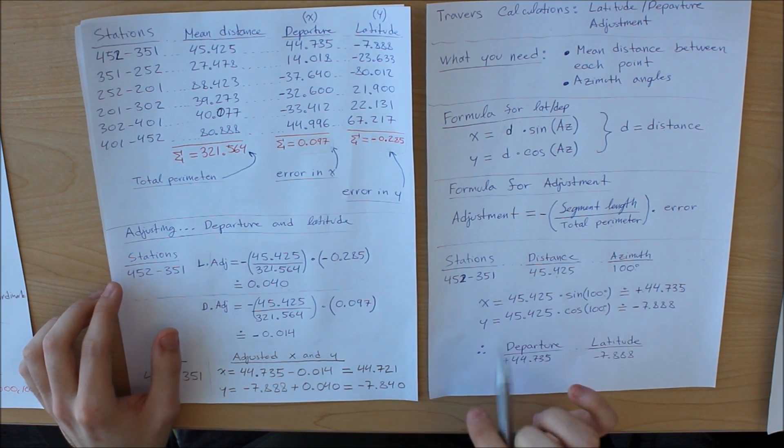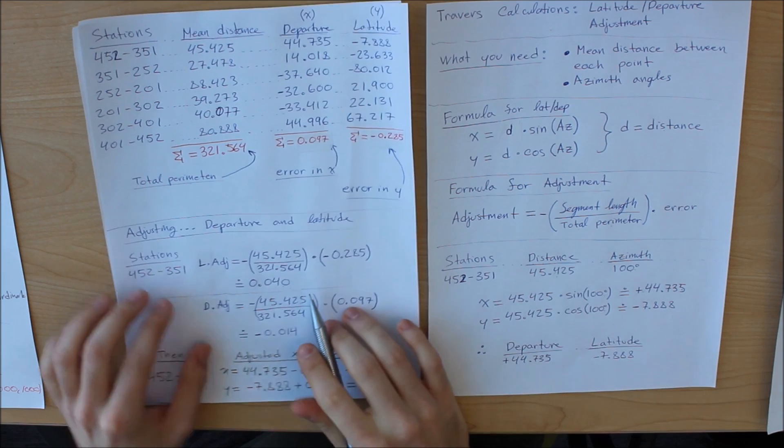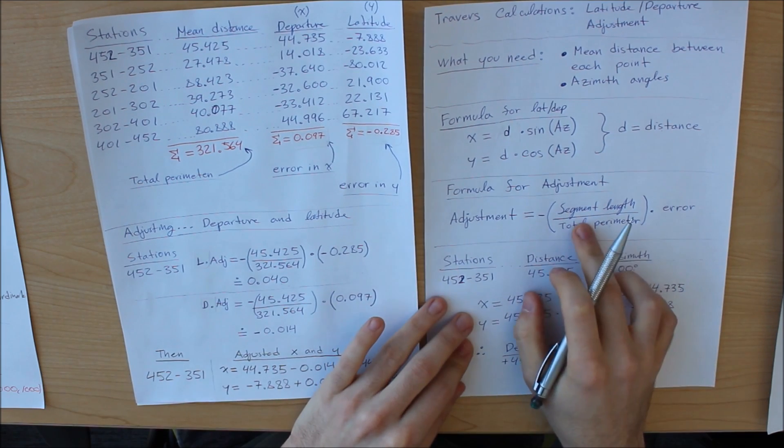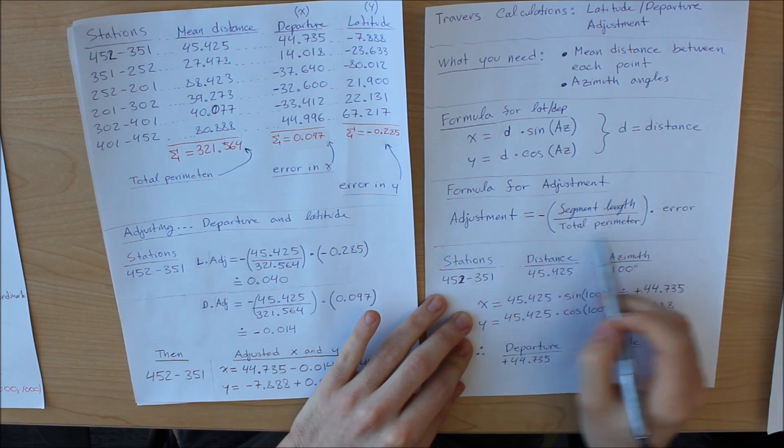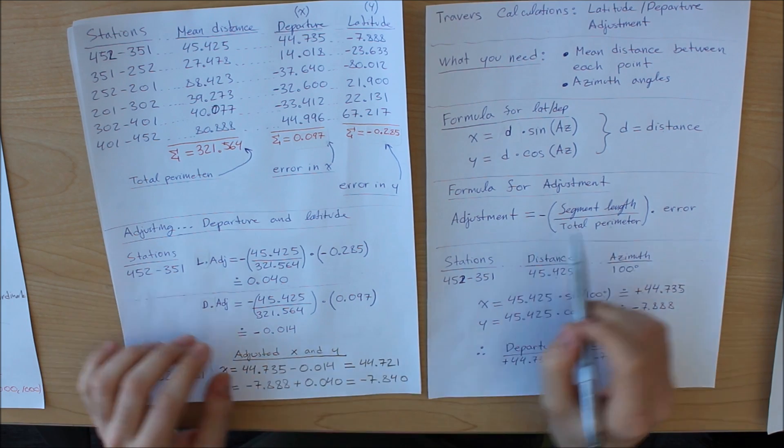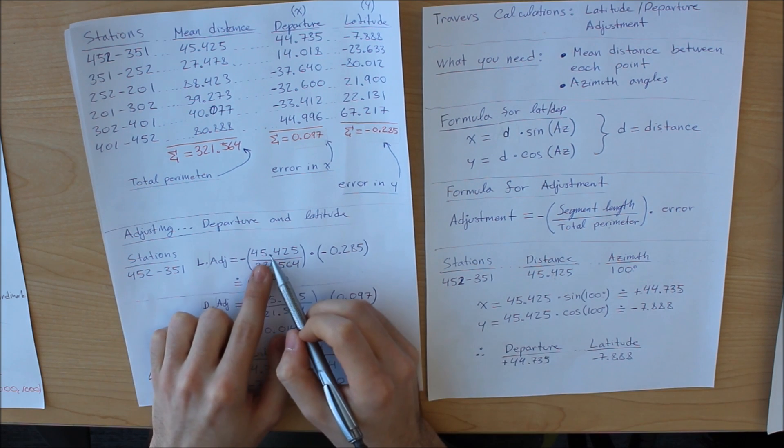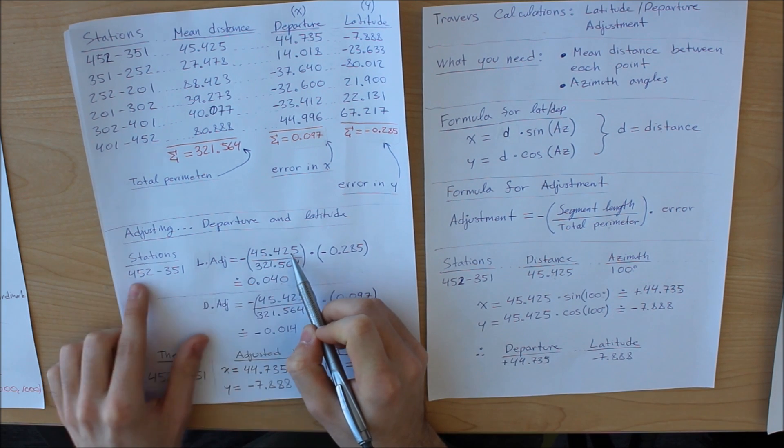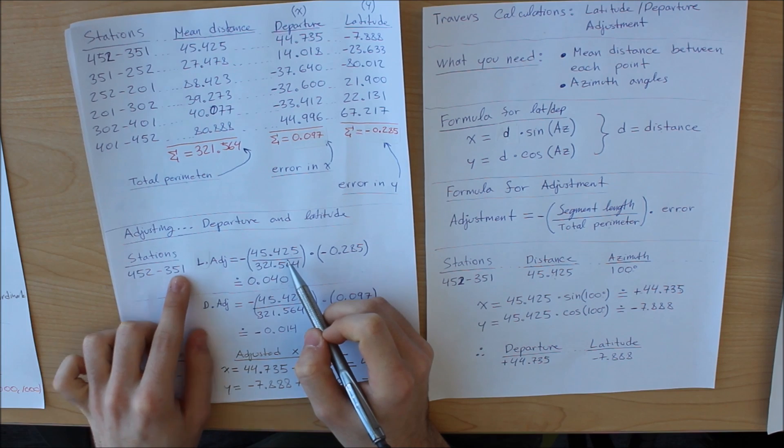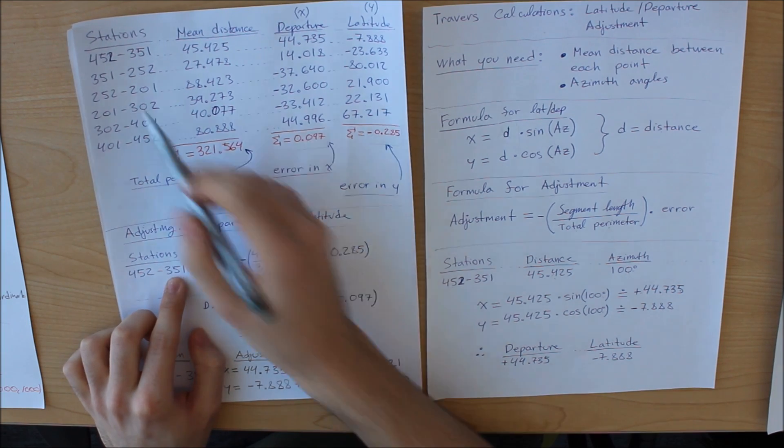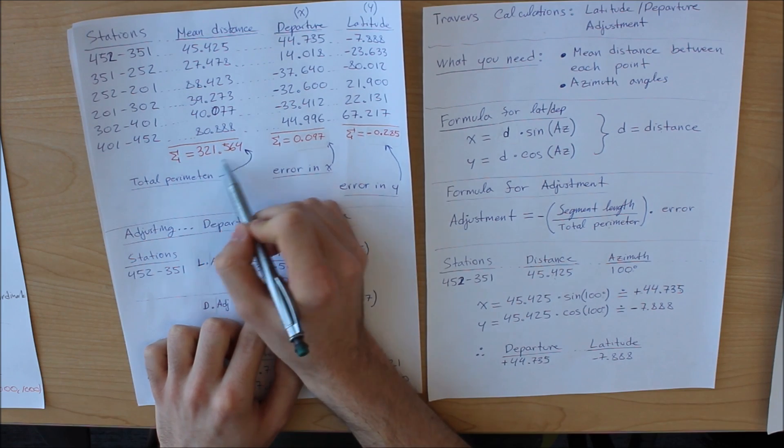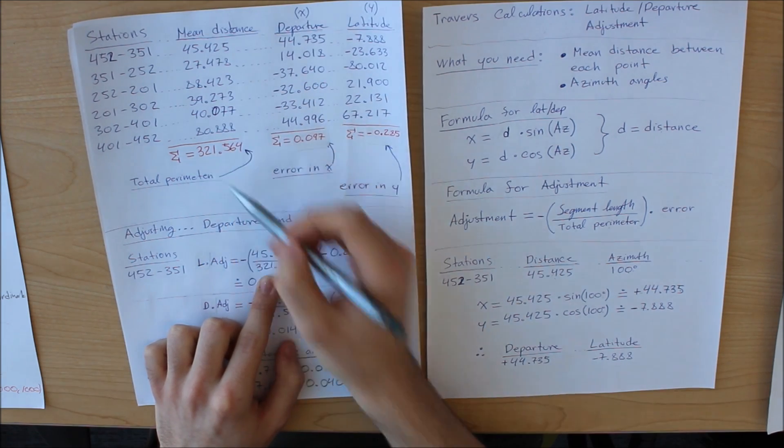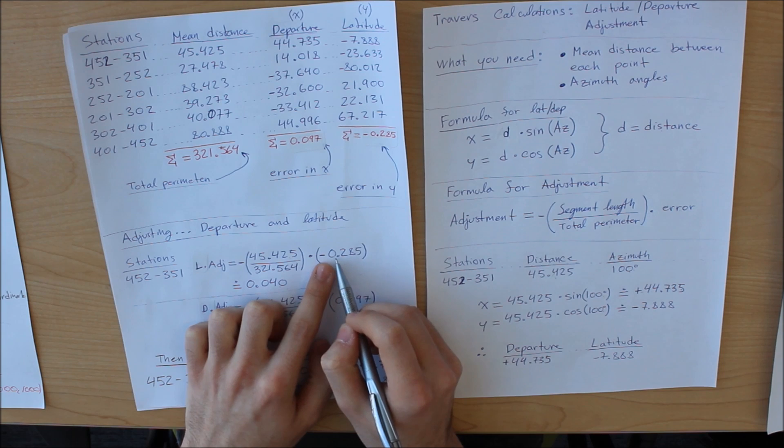So how you make the adjustments is you use the formula that I spoke about earlier. You use this formula right here. So that is the segment length, which in this case is 45.425 going from 452 to 351. Now these are stations. You divide it by the total perimeter, which is your sum of all of these. And you multiply it by your error.